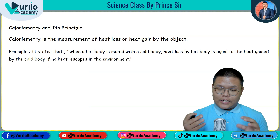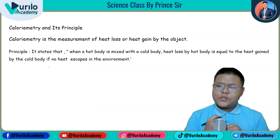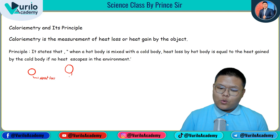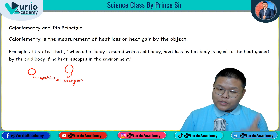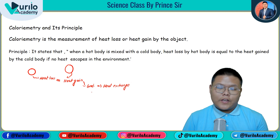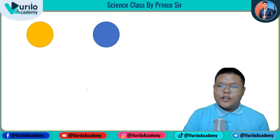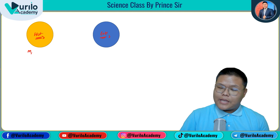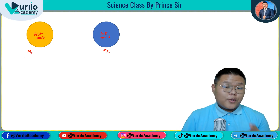Suppose I have a hotter object and a colder object. The hotter object loses heat and the colder object gains heat. Heat loss and heat gain are equal — that is the principle of calorimetry. The condition is that no heat is lost to the surroundings. This is the hot object and this is the cold object.